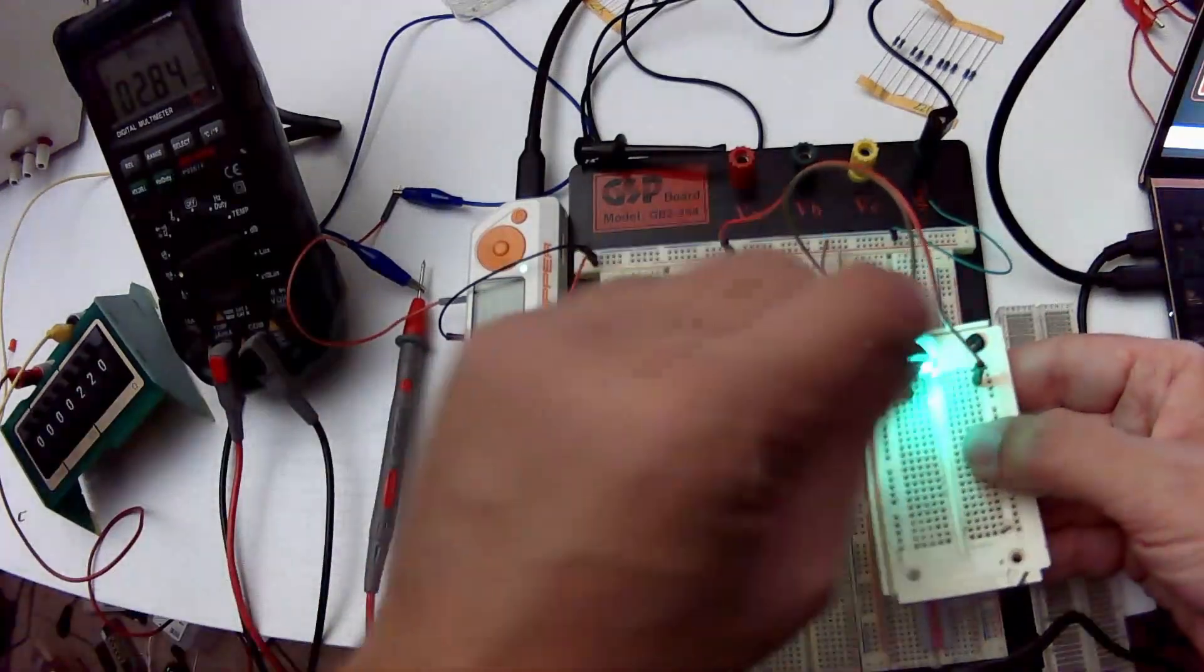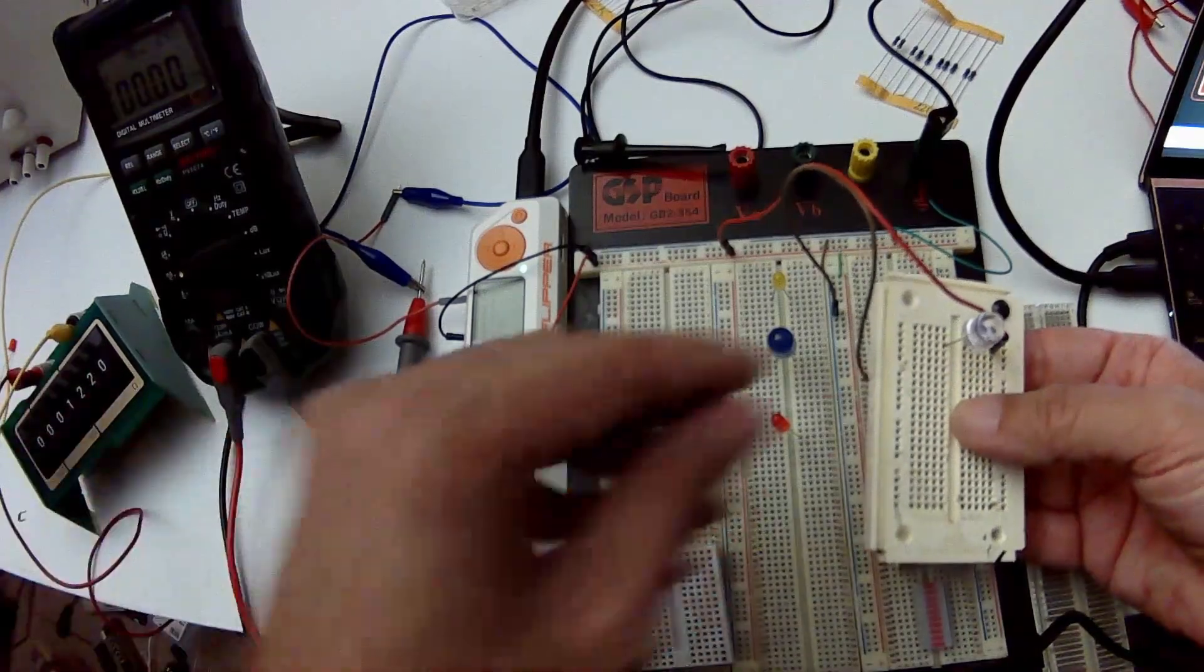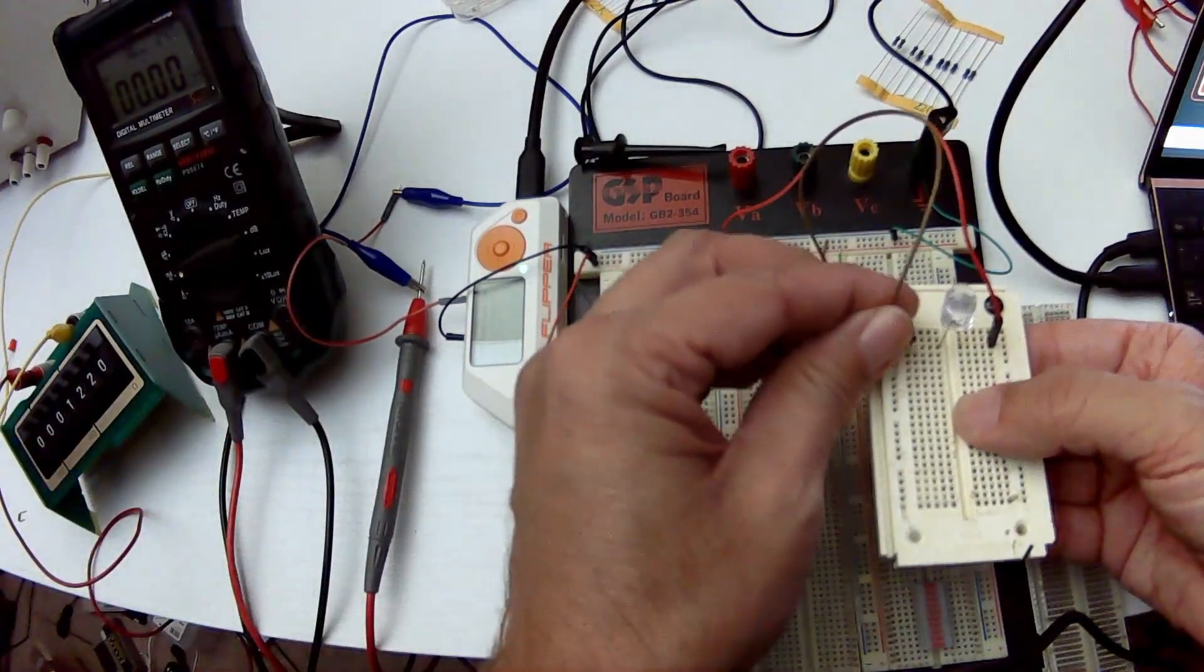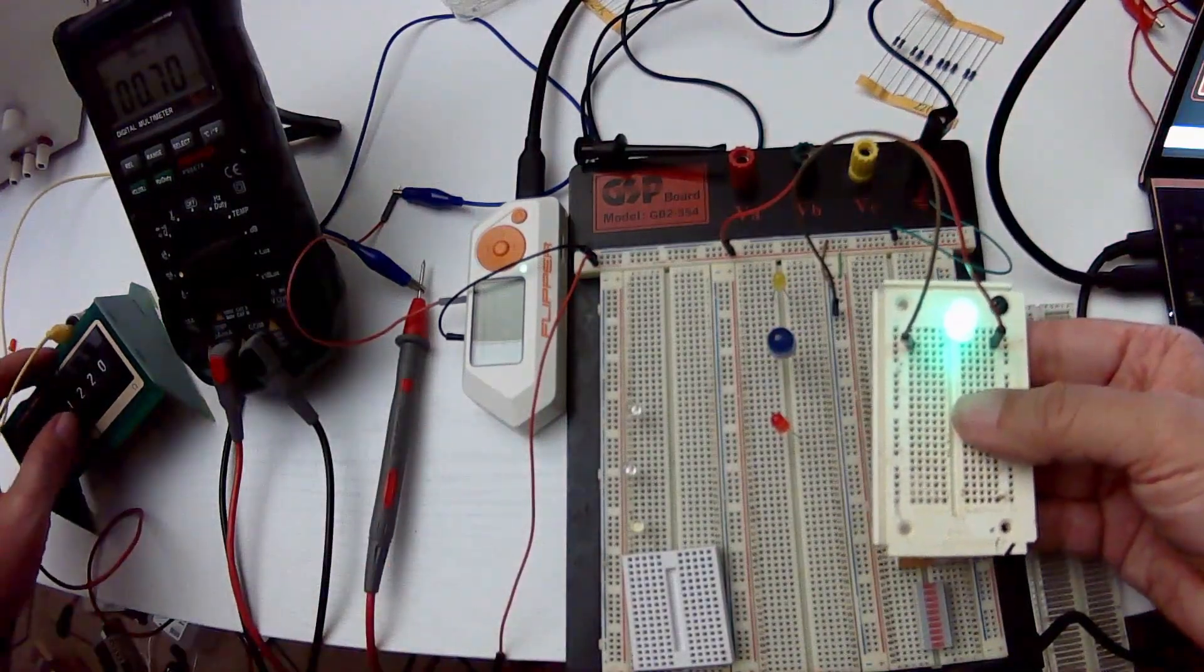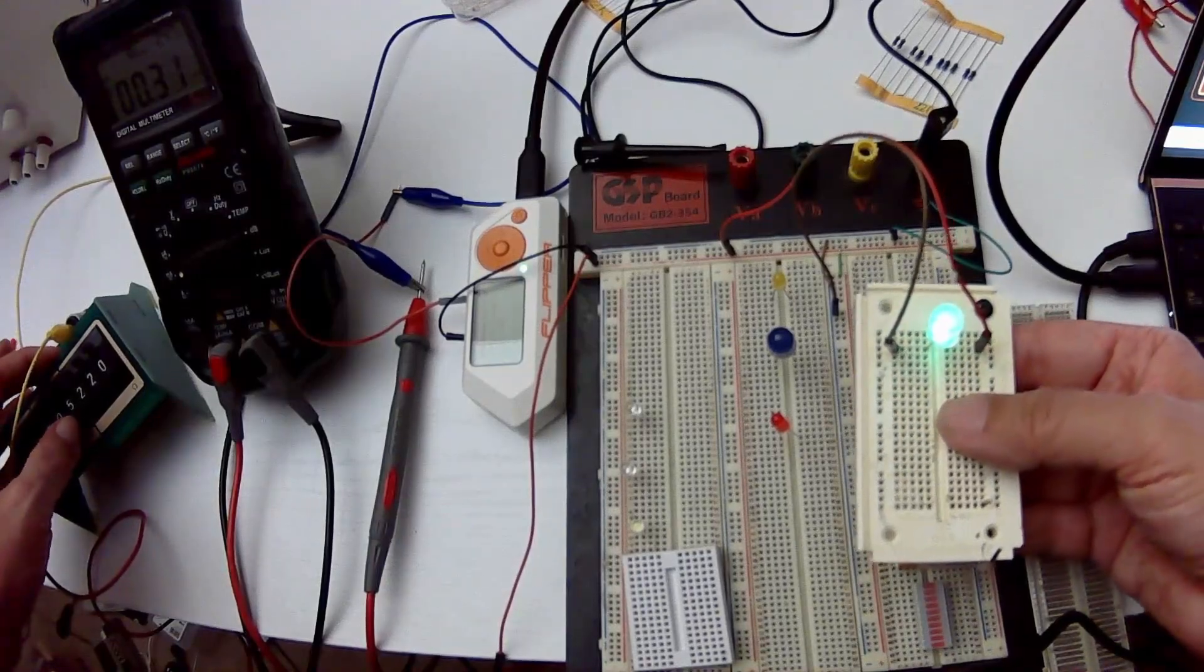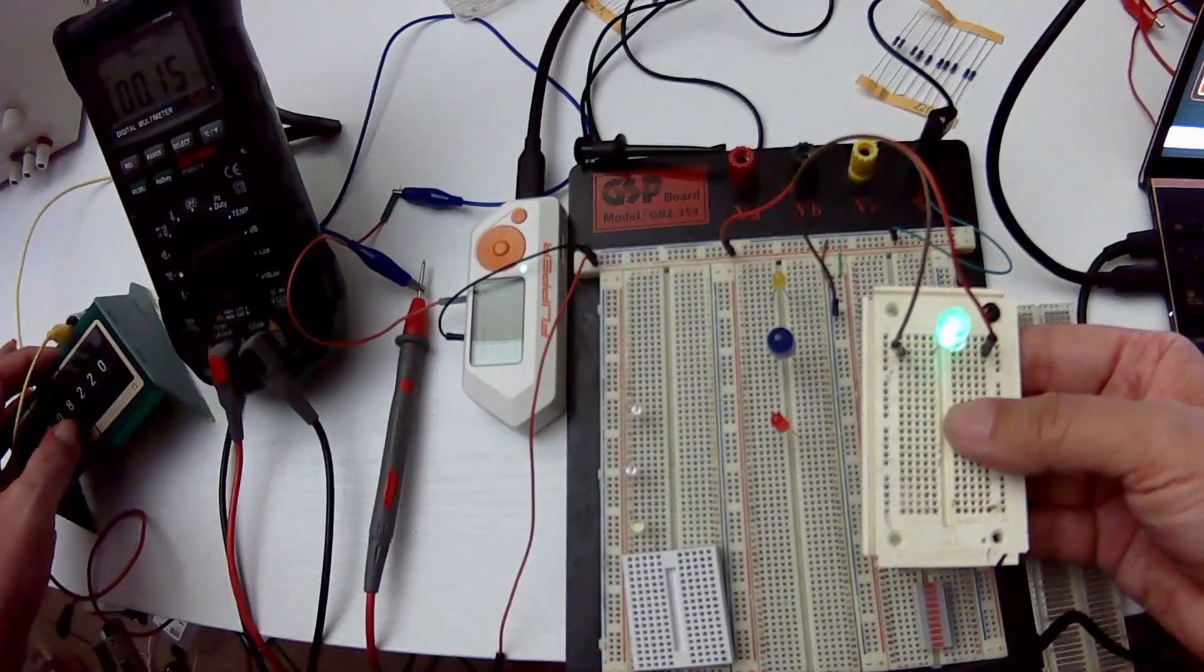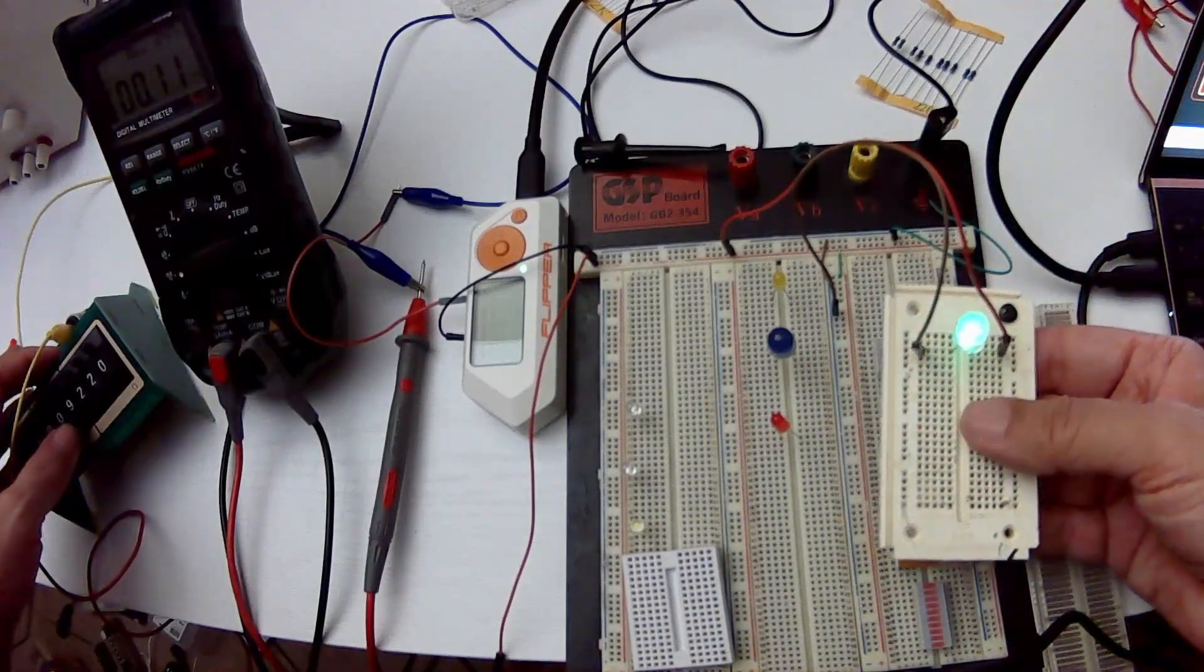So let's go ahead and increase the resistance to 1.2K. And we'll plug in the wire. And it's still fairly bright. But now instead of that, we're down to 0.7 milliamps. And as we increase the resistance, you can see the light dims and the current consumption also lowers.